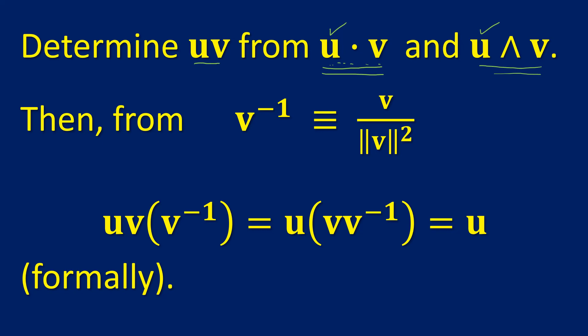We form the geometric product of u and v by adding this scalar and this bivector. So we have uv, the geometric product. Also in geometric algebra, every vector has a multiplicative inverse, which is the vector itself divided by the square of its magnitude. To find u, we multiply the geometric product uv by the multiplicative inverse of v. The products of vectors are associative, so I'll associate v with its own multiplicative inverse. Their product is just one, and u times one is u itself.